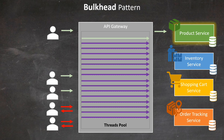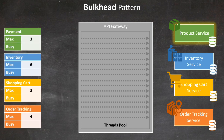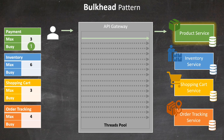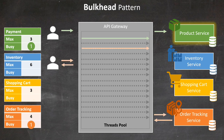This is precisely the issue the bulkhead pattern is designed to address. The key idea is to allocate a maximum number of threads to each service based on their forecasted load, creating isolated resource pools for each service. When a payment request comes in, it's allocated to the payment service's thread pool. A shopping cart request is handled by its dedicated pool. Similarly, an order tracking request goes to its own set of threads.